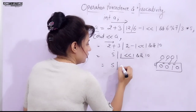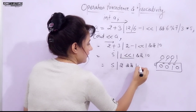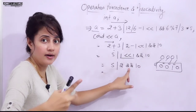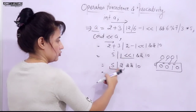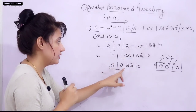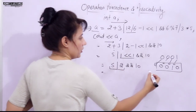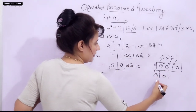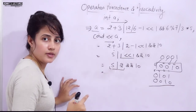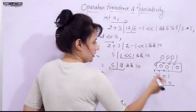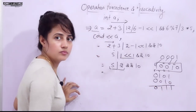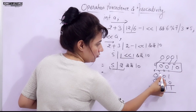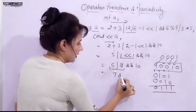Next, bitwise OR has higher precedence than logical AND. So compute 5 bitwise OR 2: convert 5 to binary 0101, and 2 to 0010. Bitwise OR gives 0111, which is decimal 7. Now we have 7 logical AND 10.